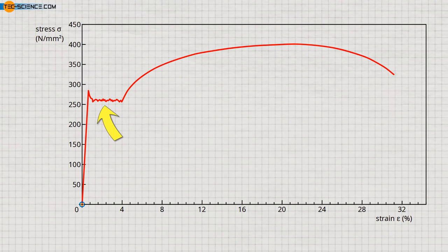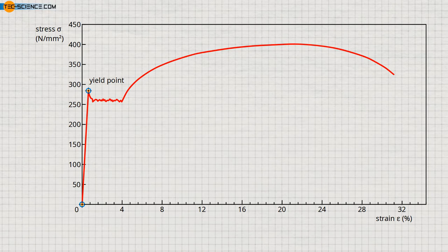In this case, the specimen stretches without a noticeable increase in stress being required. Such a curious material behavior is also referred to as the Yield Point Phenomenon. The so-called Yield Strength or Yield Point refers to the limit stress at the onset of plastic deformation.